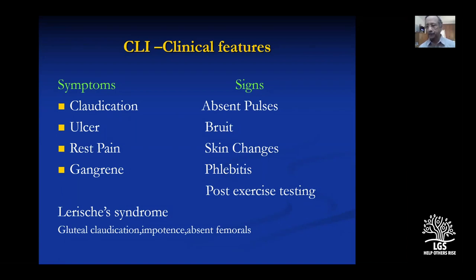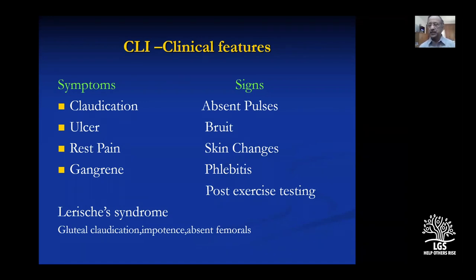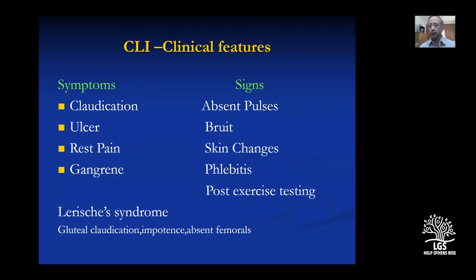Eventually even a small injury is enough to precipitate an ulcer, and once the ulcer forms, pain shifts to the ulcer becoming a rest pain localized there. Rest pain occurs even at rest due to ischemic neuritis — the nerves suffer severe lack of oxygen producing severe, sleep-disturbing pain. Over time gangrene will set in. This is the classical progression from claudication to critical ischemia to gangrene.